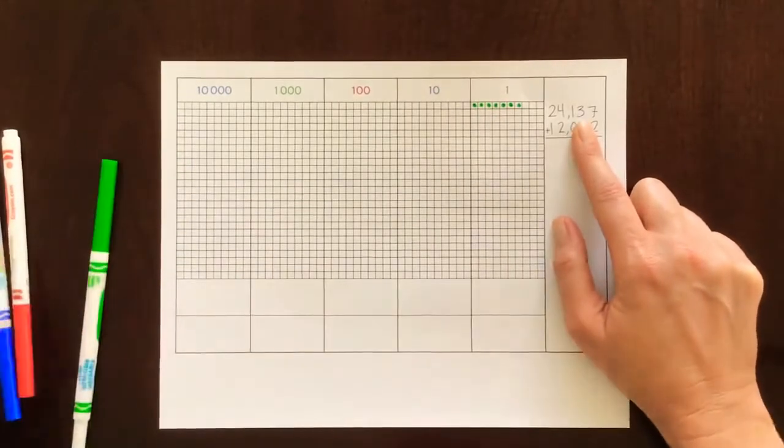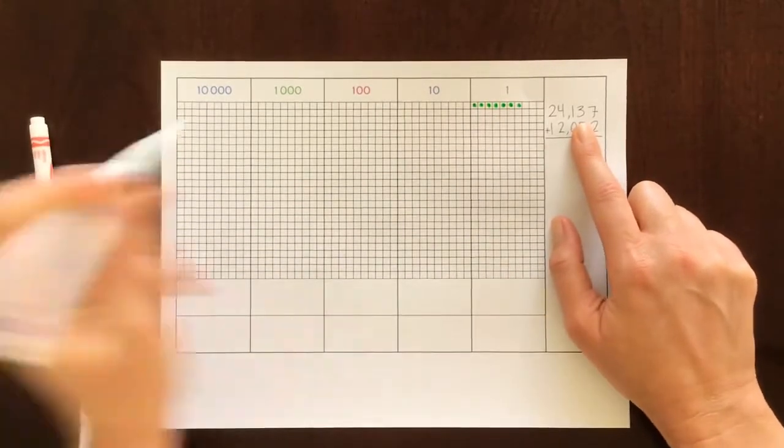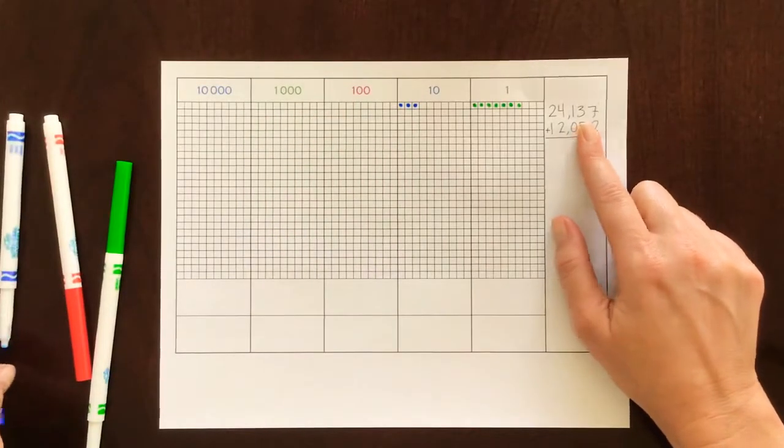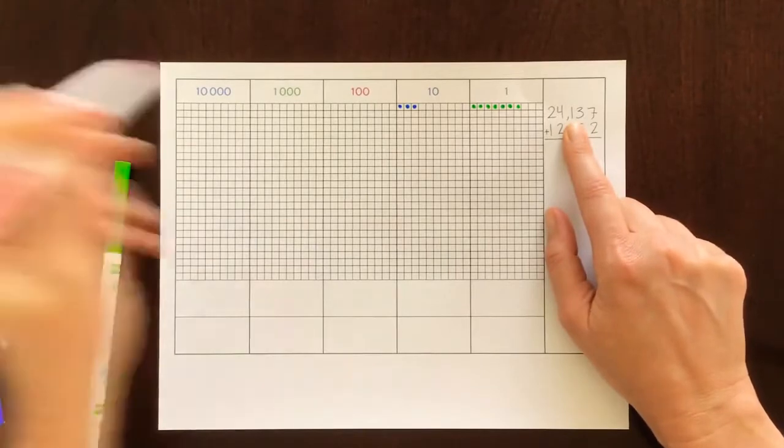Now let's move to the tens place and we have three. One, two, three. And we'll move to the hundreds place. We have one.